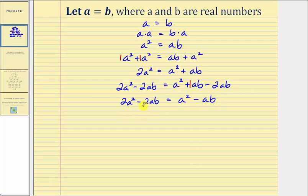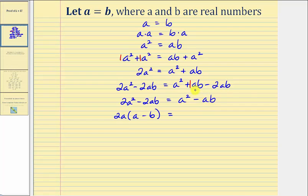Now we're going to factor the left side and factor the right side. Notice the greatest common factor on the left is two A, so we'll factor two A from the left side, which gives us two A times the quantity A minus B — which we can check with distribution if we wish. On the right, the greatest common factor is A, so we have A times the quantity A minus B.